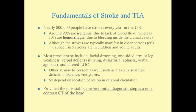Some fundamentals of stroke: nearly 800,000 people have strokes every year in the United States. Around 90% of those strokes are ischemic, which is a lack of blood flow, whereas about 10% are hemorrhagic — meaning due to bleeding inside the cranial cavity. The hemorrhage can be due to an aneurysm, such as a berry aneurysm, or due to trauma.